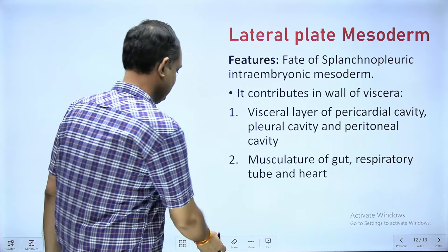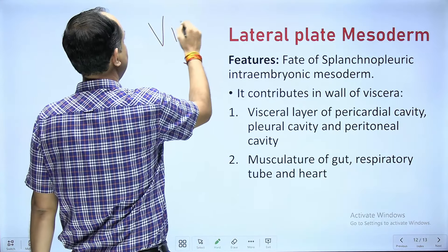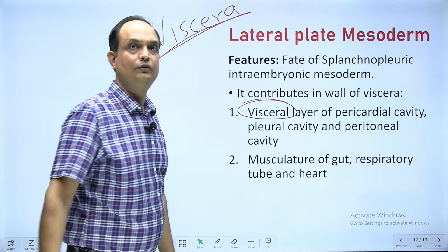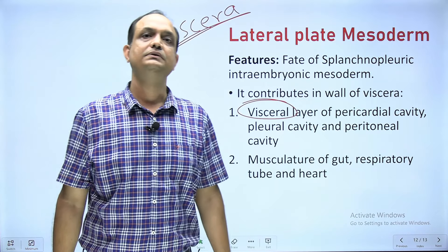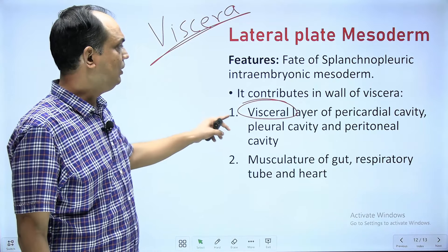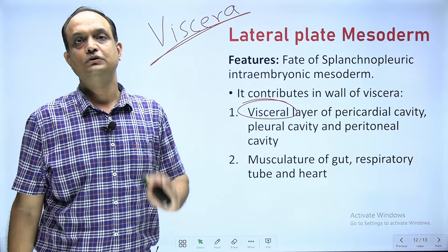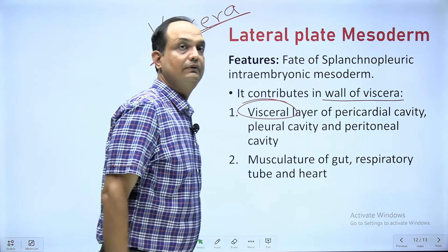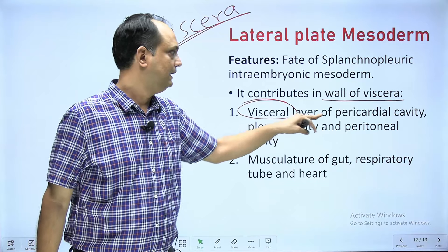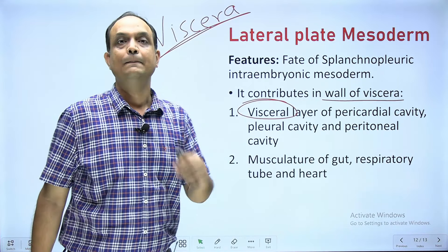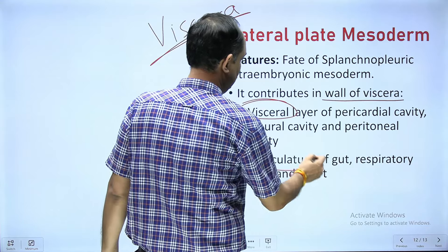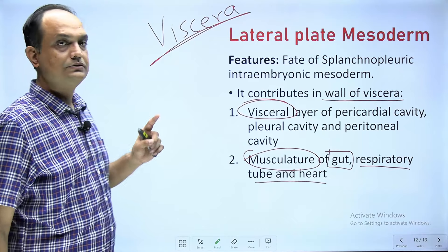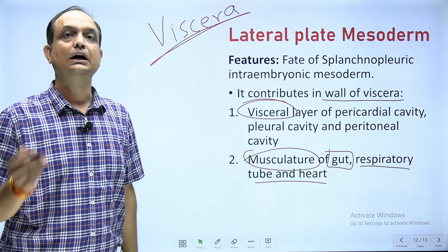The splanchnopleuric mesoderm is related to viscera, which is lined by the visceral layer. The visceral layer of peritoneum, visceral layer of pleura, and visceral layer surrounding the heart all develop from the splanchnopleuric mesoderm. It gives rise to the lateral layer of pericardial, pleural, and peritoneal cavities, and also forms the musculature of the gut tube, respiratory tube, and heart tube.